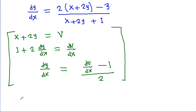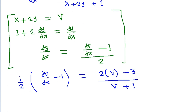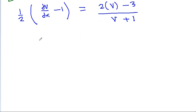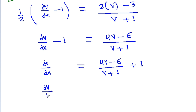So, substituting in, (1/2)(dv/dx - 1) = (2v - 3) / (v + 1). This gives dv/dx - 1 = (4v - 6) / (v + 1), and therefore dv/dx = (4v - 6) / (v + 1) + 1, which equals (4v - 6 + v + 1) / (v + 1).